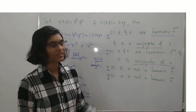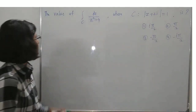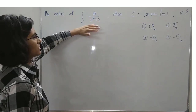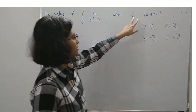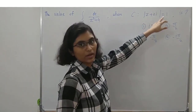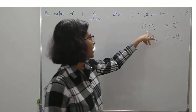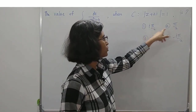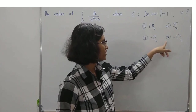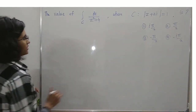The next question: find the value of the integral over C of dz/(z² + 4), where the curve C is defined by |z + 2i| = 1. The options are (i·π/2), (π/2), (-π/2), and (-i·π/2). Let us solve this.